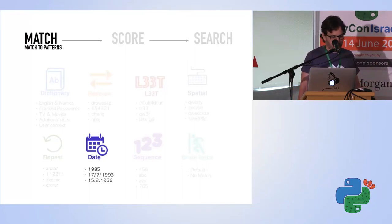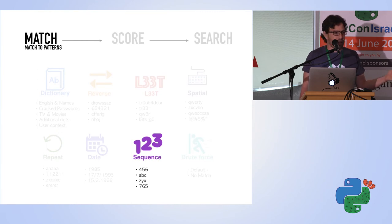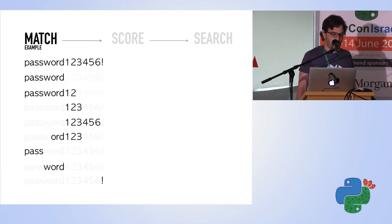Repeat is just repeating yourself: A-A-A-A or 1-1-2-2-1-1 and so on. Date is of course date, but we use regex to find different patterns. Sequence like 123456 and also in reverse order like ZYX. And everything that doesn't fall to any matcher like this one, you can call it brute force.